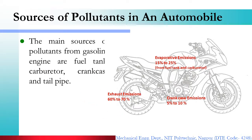If you think about any type of IC engine vehicle, you might think that the main source of emission is the tailpipe or exhaust. Exhaust emission is one source, but it only constitutes 60–70% of emission from any vehicle. The other sources are the fuel tank and carburetor, contributing evaporative emissions of up to 15–25%.